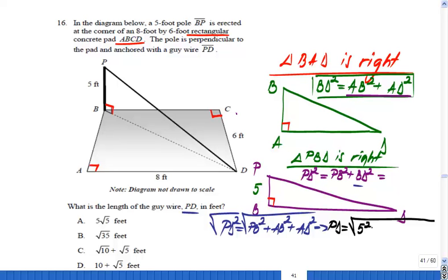What is PB? PB is 5, so 5 squared. What is AB? AB is 6, so 6 squared. Plus AD squared. AD is 8, so 8 squared.